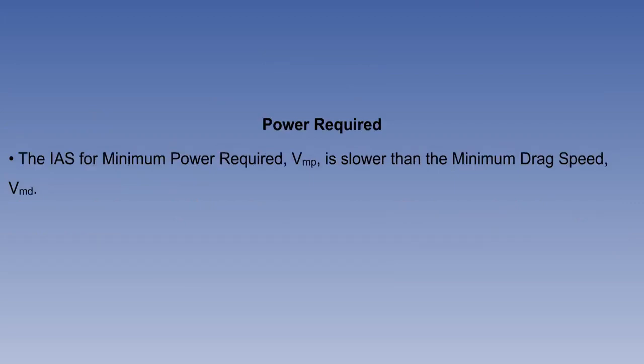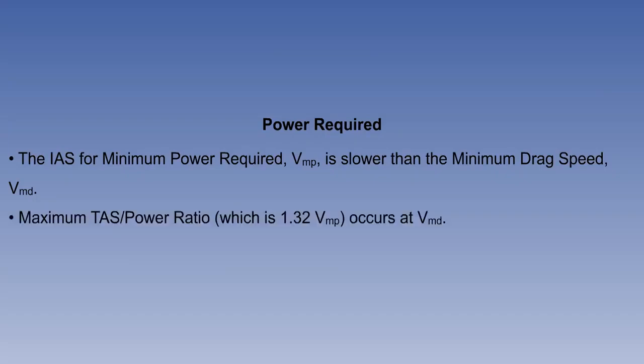The IAS for minimum power required, VMP, is slower than the minimum drag speed, VMD. Maximum TAS to power ratio, which is 1.32 VMP, occurs at VMD.